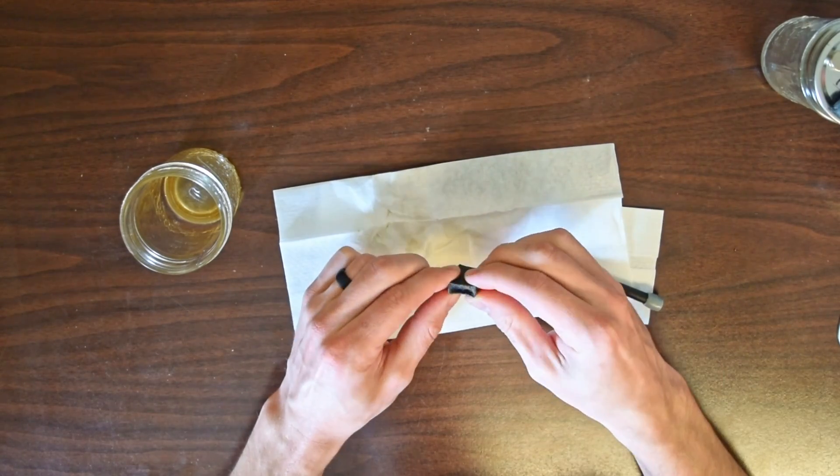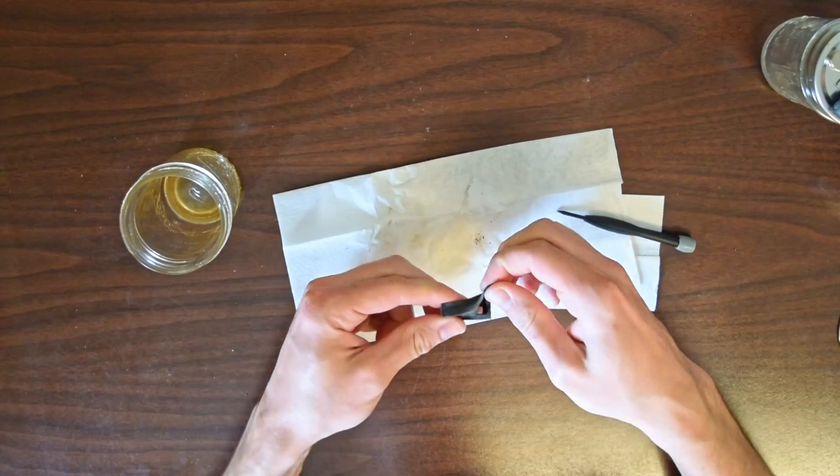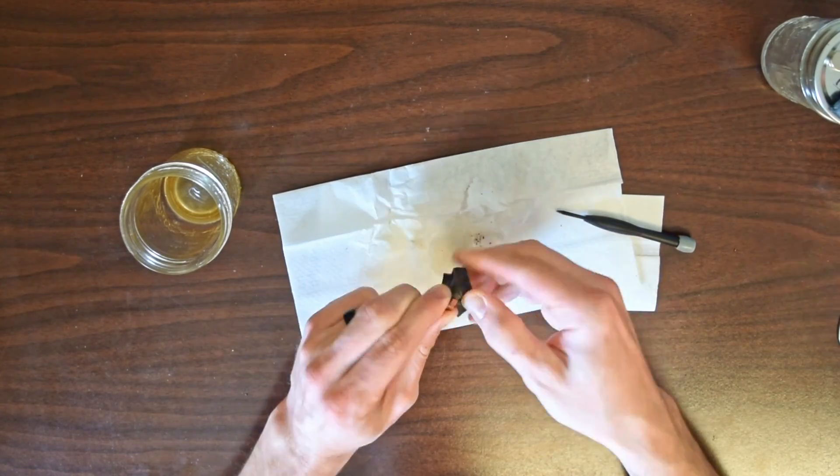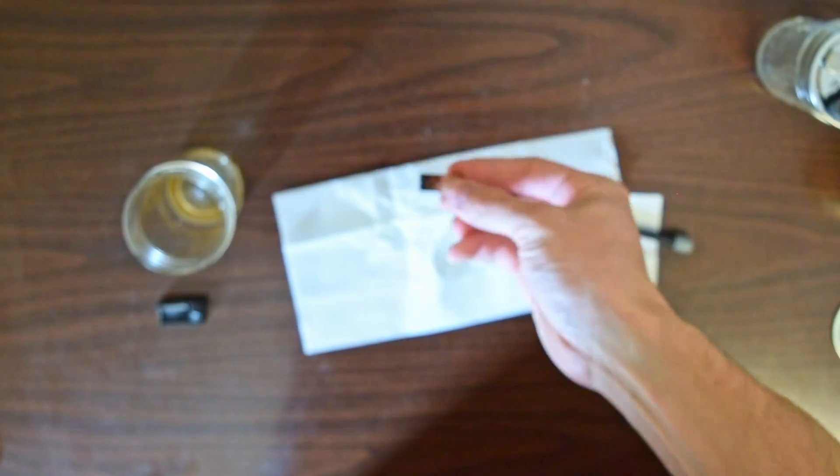The vinegar ate away most of the top nickel layer, exposing the copper underneath. In some spots, it caused all three layers of plating—the nickel, copper, and nickel—to completely corrode, exposing the raw material. The raw material is nearly two-thirds iron, so obviously it started to corrode as well.